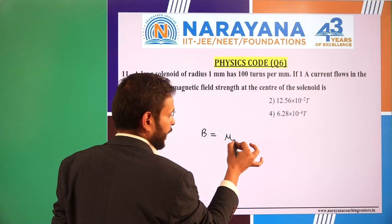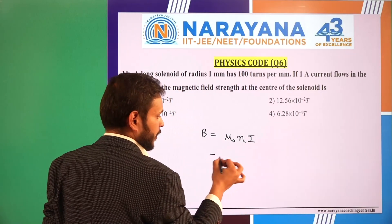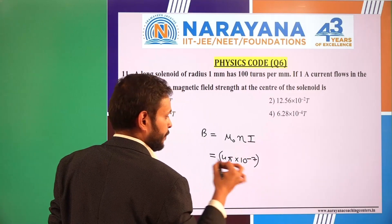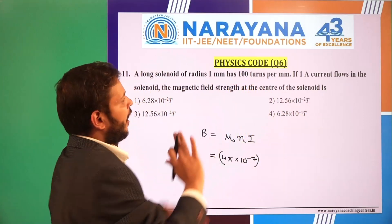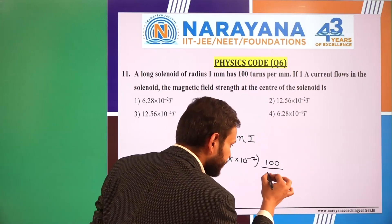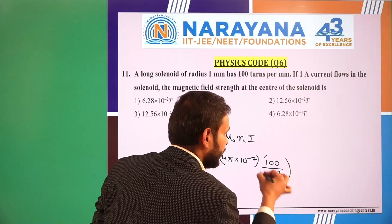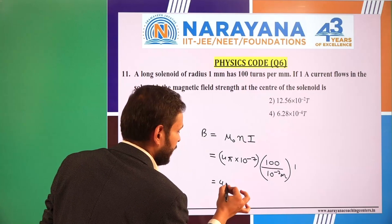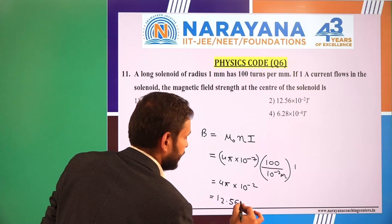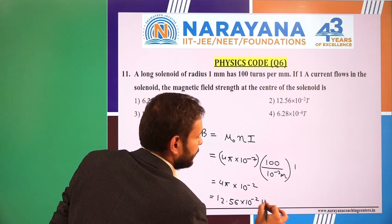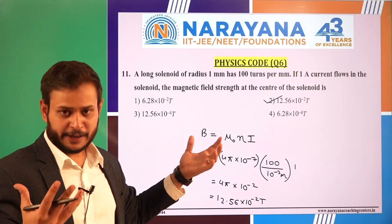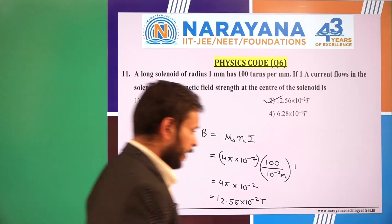The field will be μ₀nI. The value of μ₀ is 4π × 10⁻⁷, and n is the number of turns per unit length, that is 100 per mm. We convert that to meters: 10⁻³ meter, and current is 1. Solving this gives 4π × 10⁻² = 12.56 × 10⁻² tesla. So option 2 is correct. This question is from magnetic field or Biot-Savart's law from magnetism.